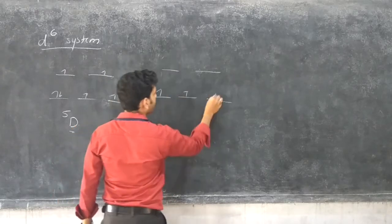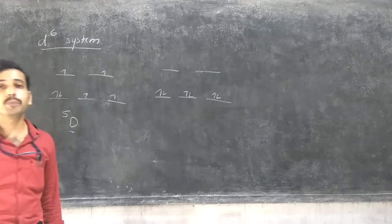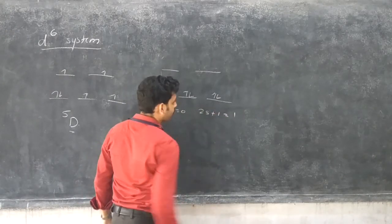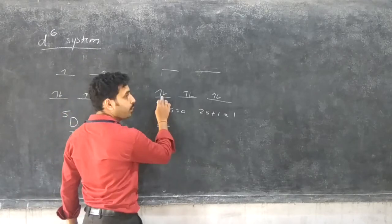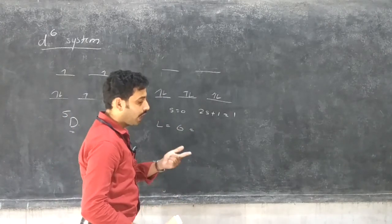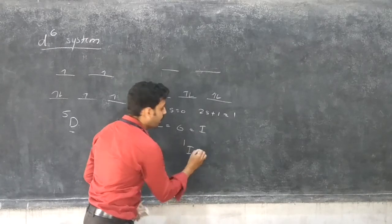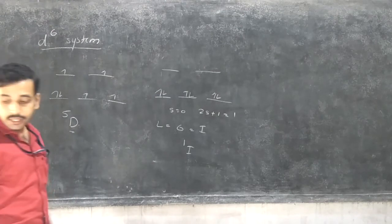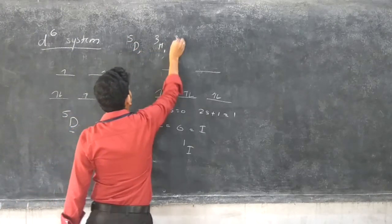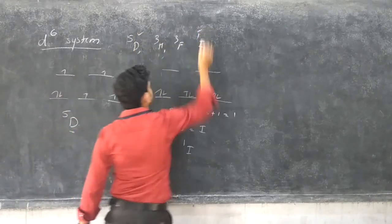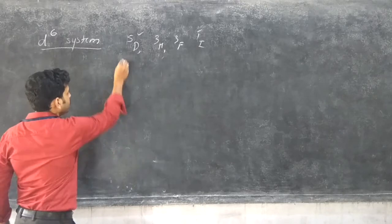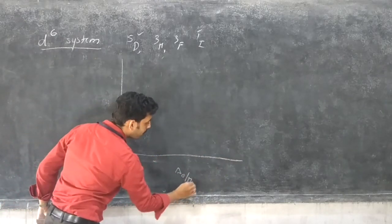In low spin complexes, with electrons 1 through 6, S equals 0 and 2S+1 equals 1. The L value gives: 2, 4, 6, so L equals 6, meaning the I term: S, P, D, F, G, H, I. The ground state term is 1I.